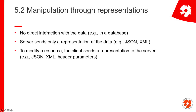The second sub-constraint — manipulation through representations — means we don't want to directly interact with data, for example by making direct database calls. Instead we send representations. Rather than returning the actual minesweeper board from the database, you get a JSON representation. If you want to change a resource — for example modify a payment in PayPal — you send back JSON describing what you want to change, rather than directly writing to the database.